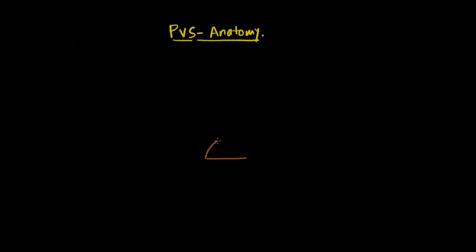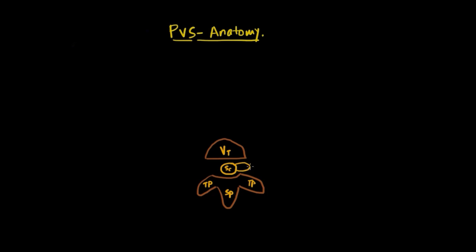all the vertebrae consist of an anterior vertebral body and a posterior neural arch. This posterior neural arch constitutes two lateral transverse processes and a median spinous process, whereas the spinal cord lies between these two structures. The spinal cord gives at each level a ventral nerve root and a dorsal nerve root.